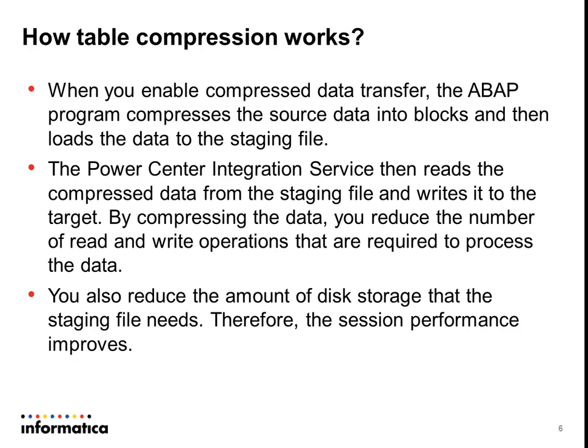When you enable the compression feature by setting the custom property, the corresponding ABAP program on the SAP side compresses the source data into blocks and then loads it into the staging file. The staging file created at the staging directory is in a compressed format. The Power Center Integration Service then reads the compressed data from the staging file and writes it to the target. By compressing the staged source data, we reduce the number of read-write operations between the Power Center Server and SAP Box, reduce disk usage at the staging file directory, and sessions that were creating huge staging files will be greatly benefited, with better performance assured.